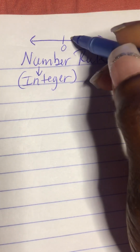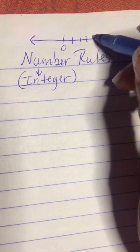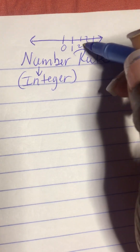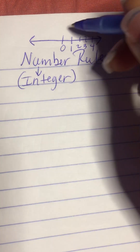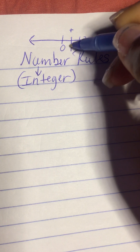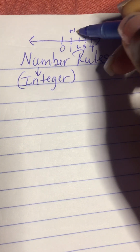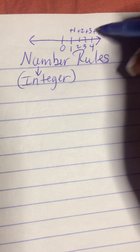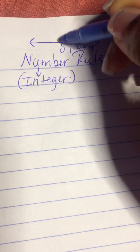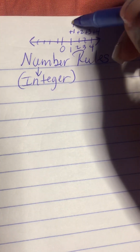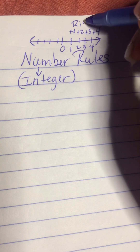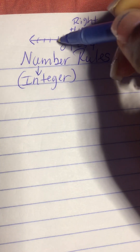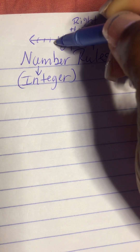So you have 0 and then to the right you have positive 1, 2, 3, 4, etc. If you see no sign in front of a number, it means that it's positive. We just don't want to write the positive or the plus sign every single time. To the left, you're going to have your negative numbers — negative 1, negative 2, negative 3.